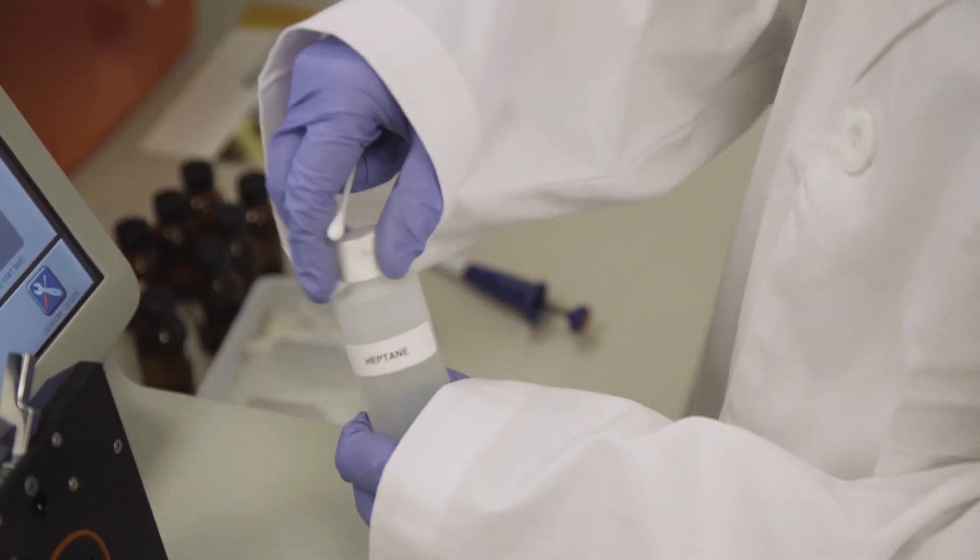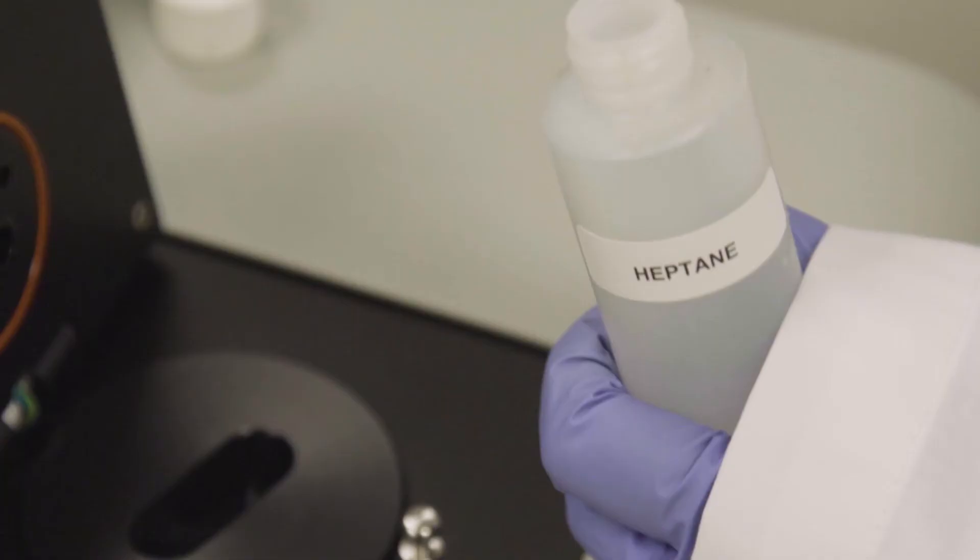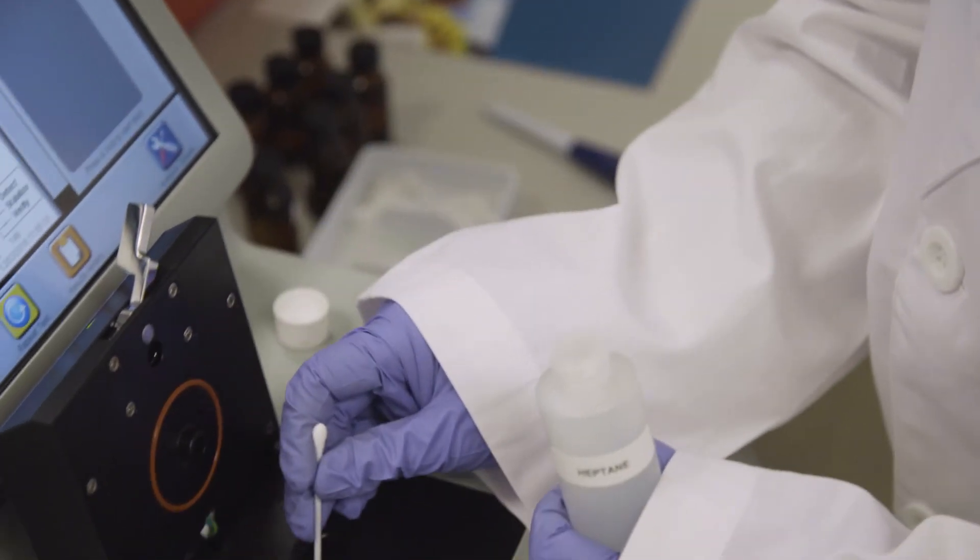Then soak a new cotton swab with solvent, preferably heptane, and gently swab around the inside of the sample cup's surface.